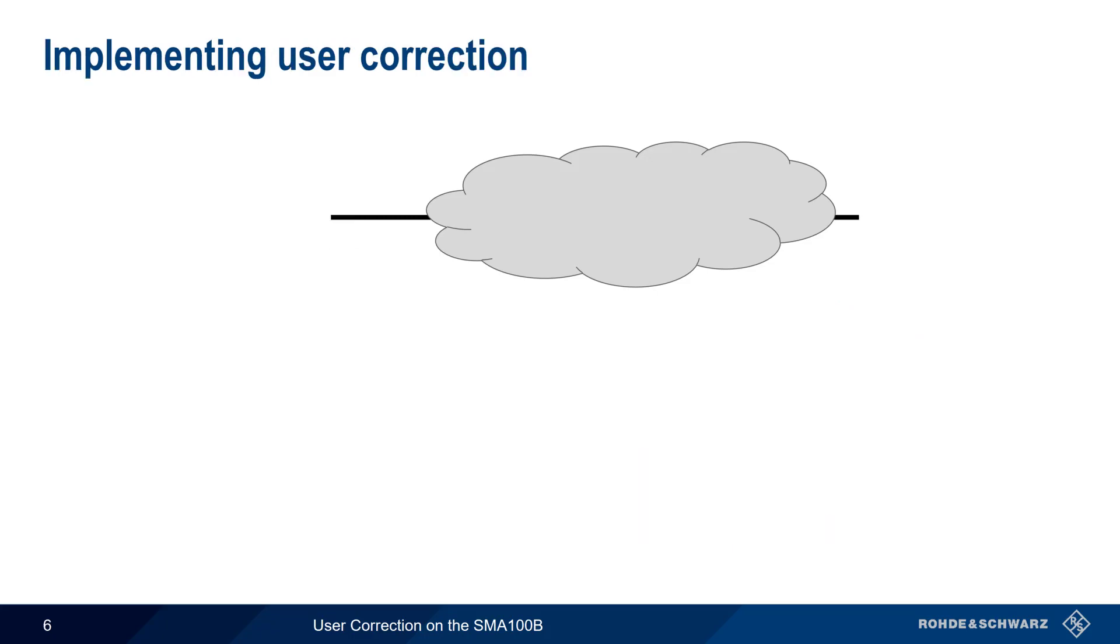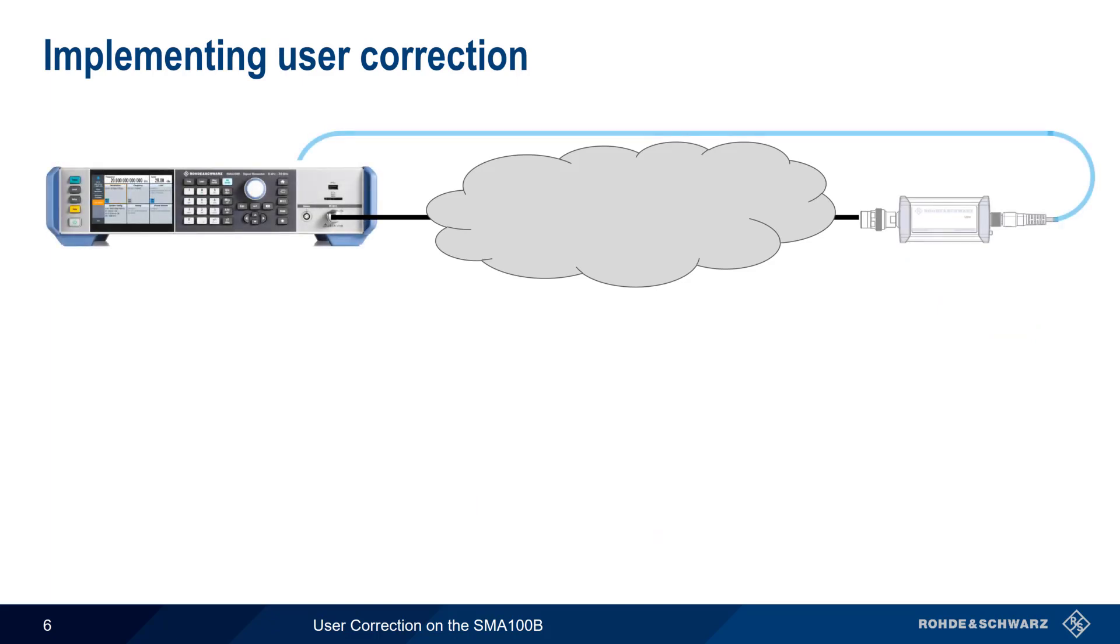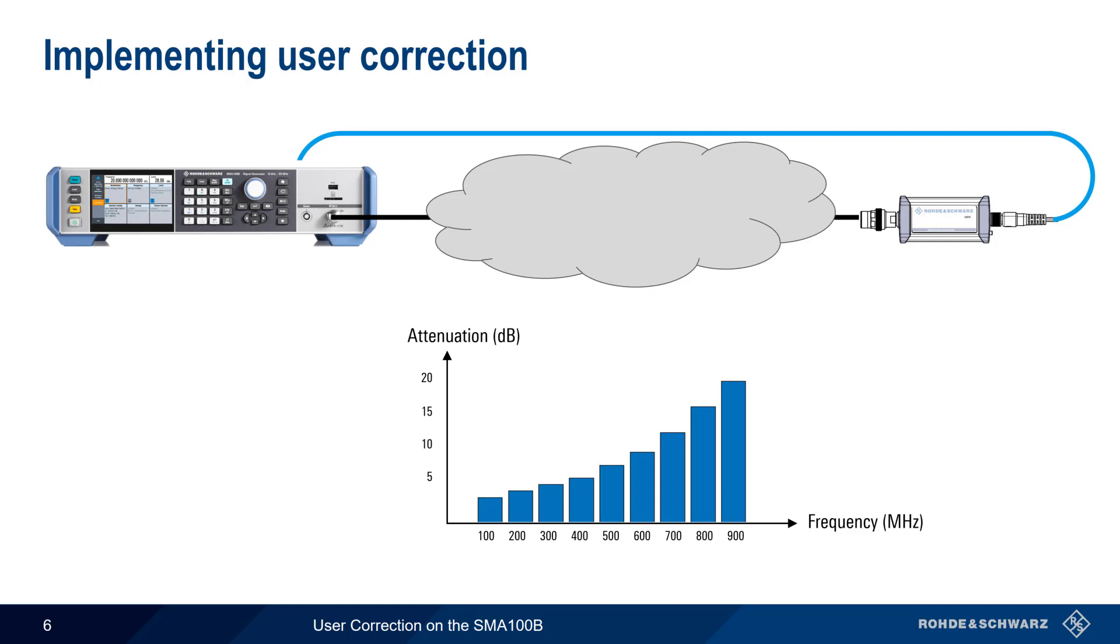The most common way that user correction is implemented is by using a signal generator and a power sensor to measure the frequency response of the signal path, and then use those values to create a correction table. This presentation will show how user correction tables are built and applied using an SMA100B analog signal generator and an NRP series RF power sensor.